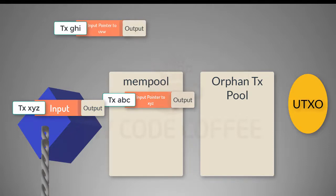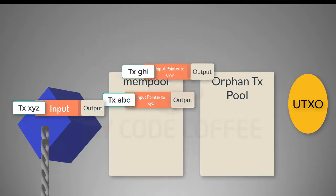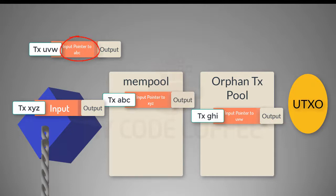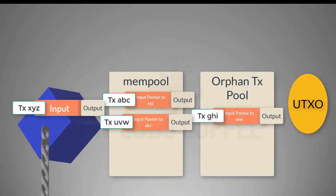Now let's say another transaction GHI arrives, whose input points to transaction UVW. The node searches for UVW in both the mempool and the blockchain but cannot find it, so GHI is saved in the orphan transaction pool. Later, transaction UVW itself arrives. Before getting excited, we verify that UVW is itself valid — its input points to an unspent output of our earlier transaction ABC, so it passes all checks. UVW is moved to the mempool, and since GHI's parent is now known, GHI can also be moved to the mempool.